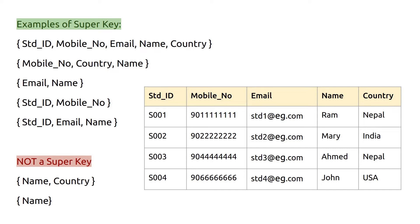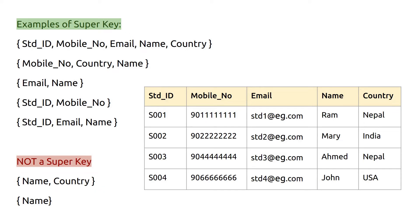Now, which combination is not a super key? Name plus country is not a super key, because the combination of names and countries can't be unique — there could be many students whose name is Ram and who are from Nepal. And obviously, name alone cannot be a super key, since names are not unique.